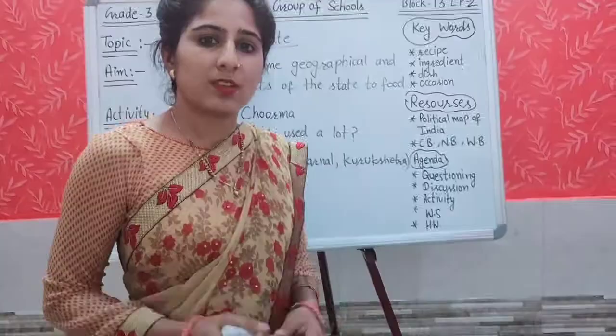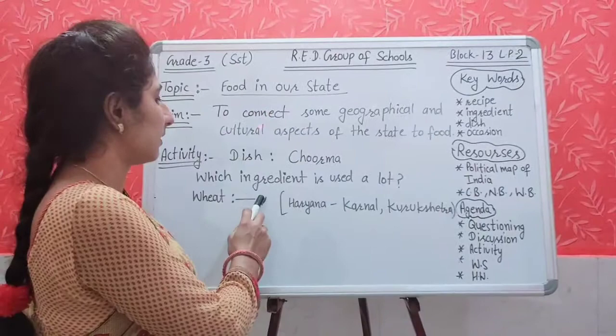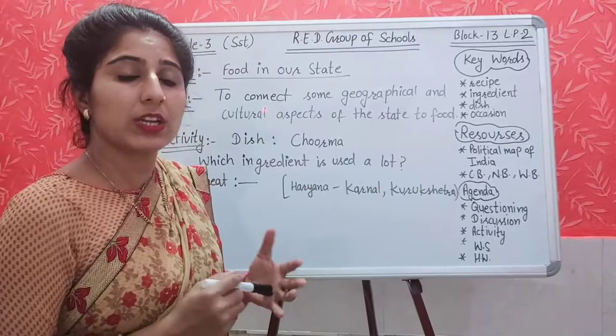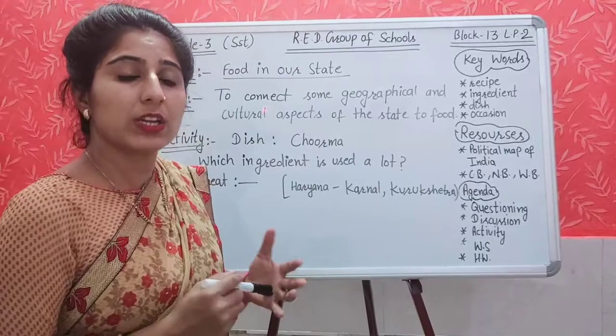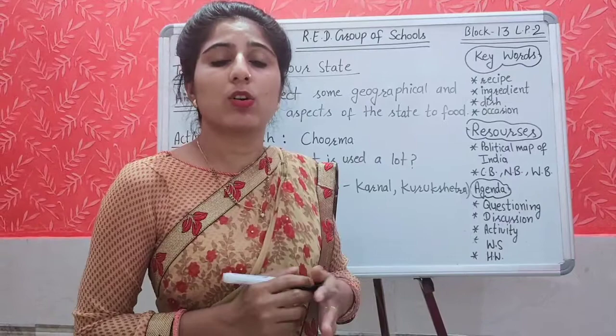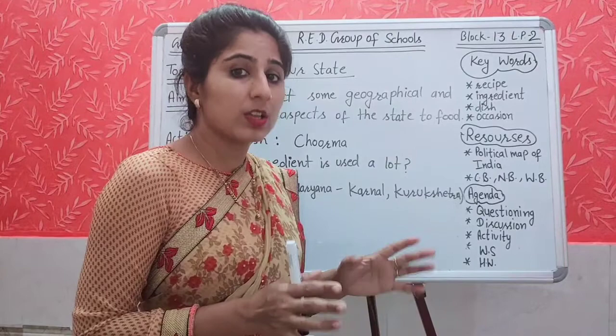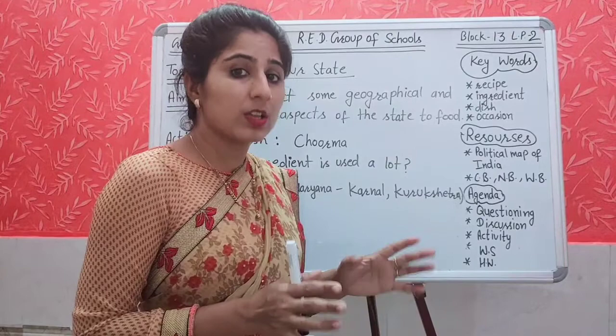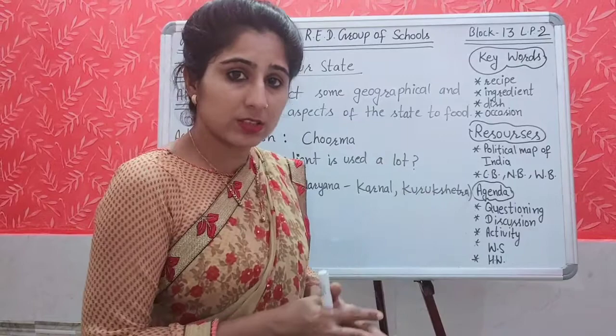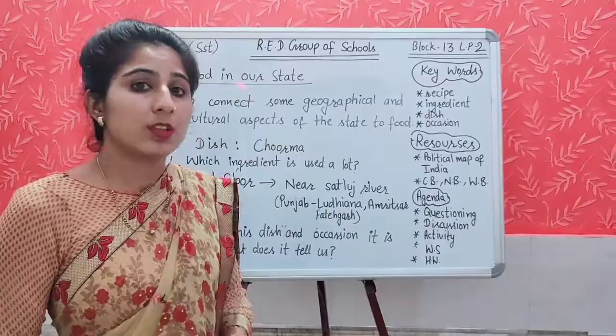Because it is easy to make and the ingredients are easily available. Wheat flour is used and wheat is widely grown — as shown on the map — in Haryana, Punjab, and Madhya Pradesh. Students, look on the map and find out the cities of Haryana: Kurukshetra and Karnal, where the wheat crop is grown widely. Pause the video and find out these cities on the map.